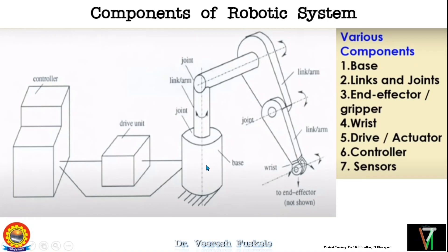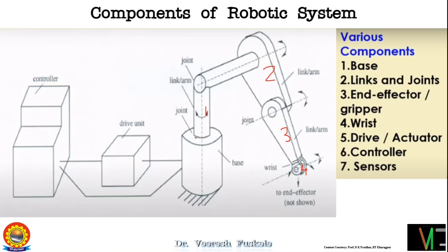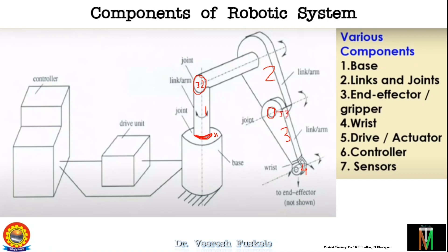Apart from the fixed base, you have various links and joints. This is link one, link two, link three, and link four. Connecting all these links we have joints — joint one (J1) connects the base and link one, joint two (J2), and joint three (J3) at the wrist portion. Of course, you have more joints at the end effector, which we will discuss later.